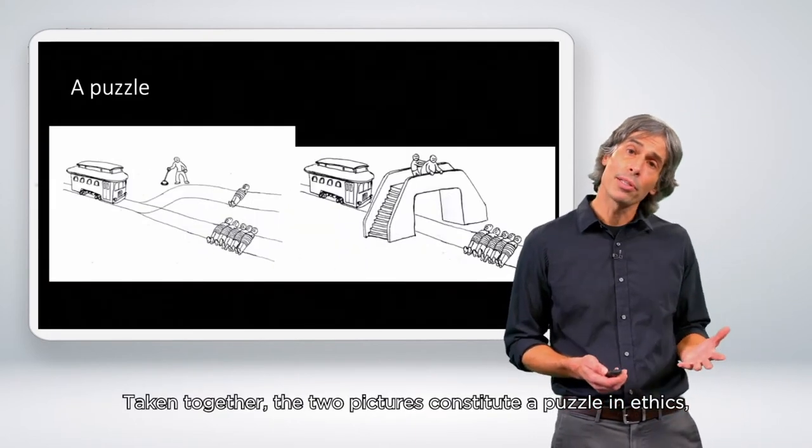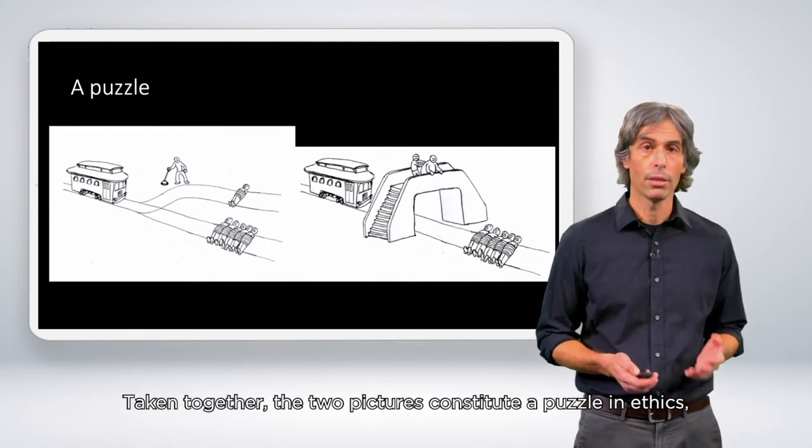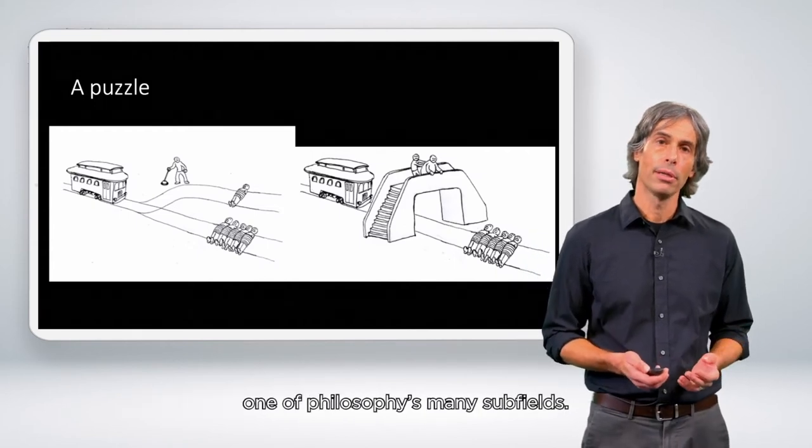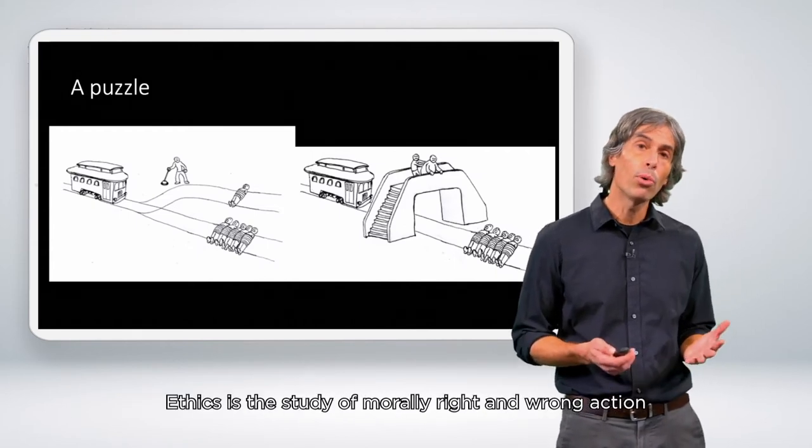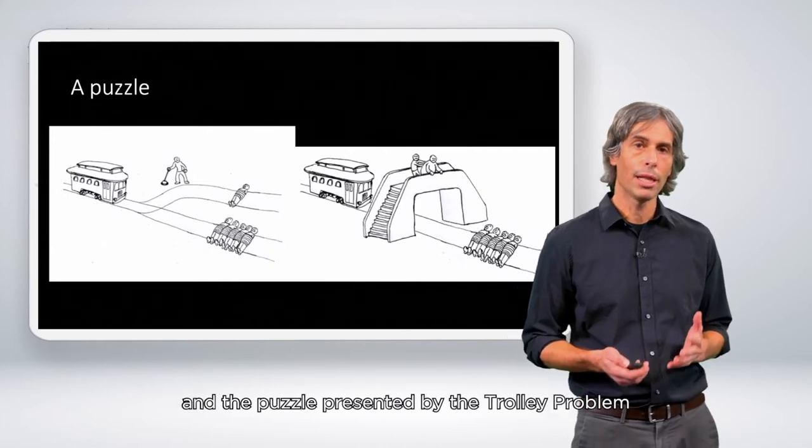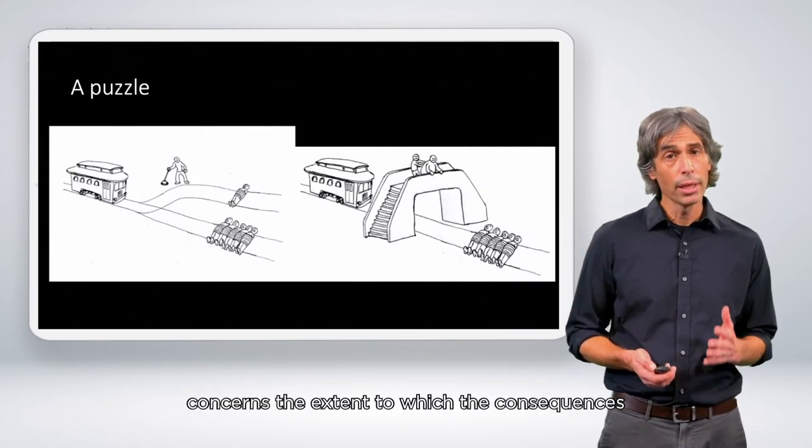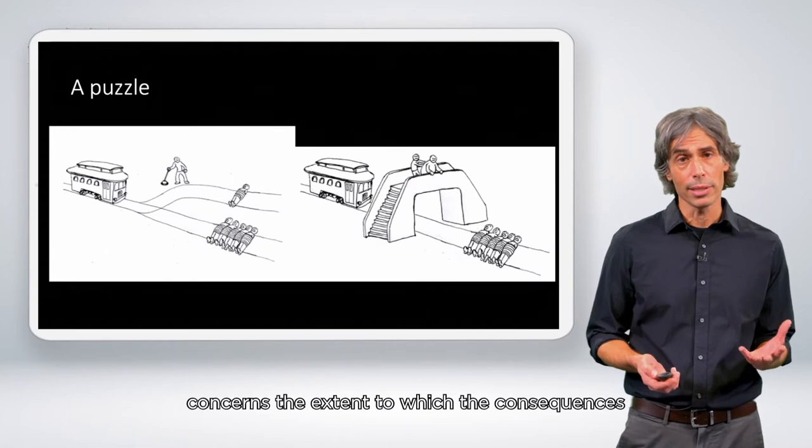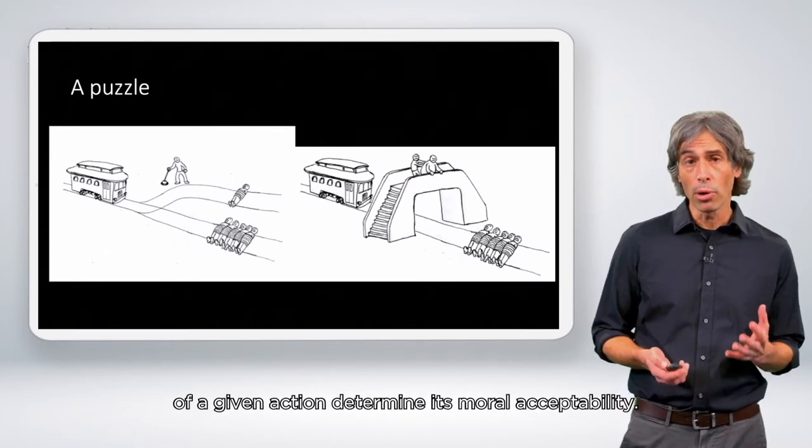Taken together, the two pictures constitute a puzzle in ethics, one of philosophy's many subfields. Ethics is the study of morally right and wrong action, and the puzzle presented by the trolley problem concerns the extent to which the consequences of a given action determine its moral acceptability.